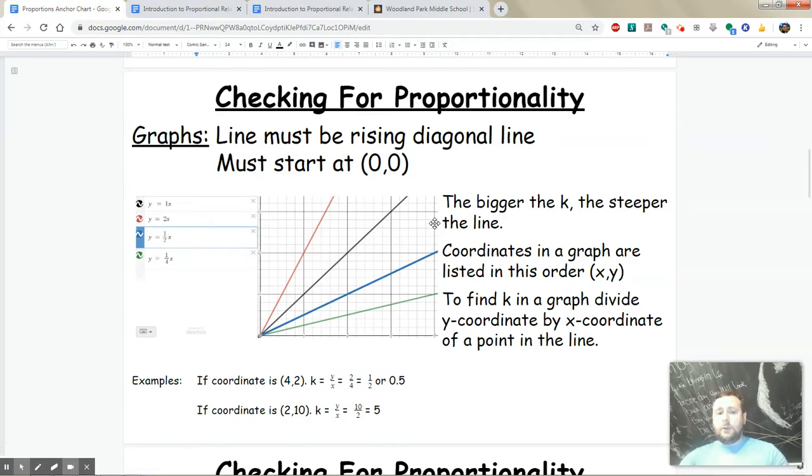For example, if you look at these lines, the red has the biggest k at 2, then the black line has k of 1, the blue line is 1/2, and the green line is 1/4. As k decreases, the line gets less and less steep.